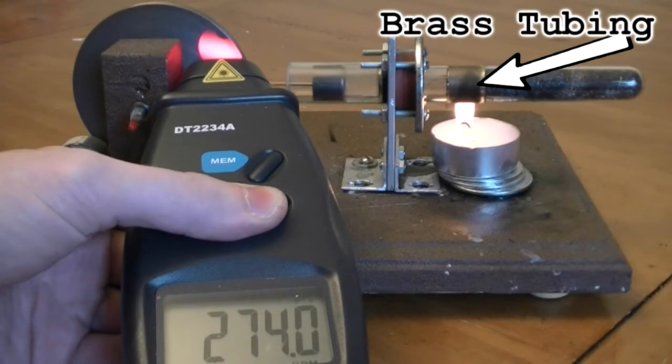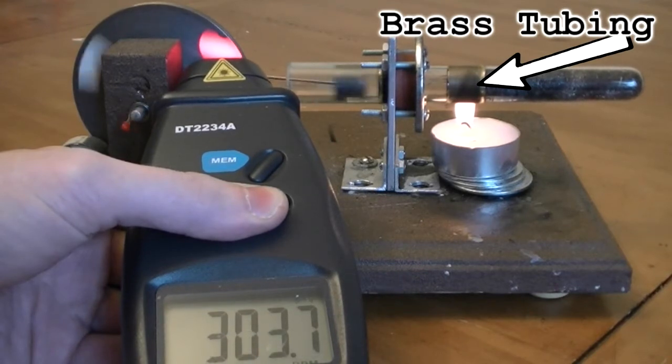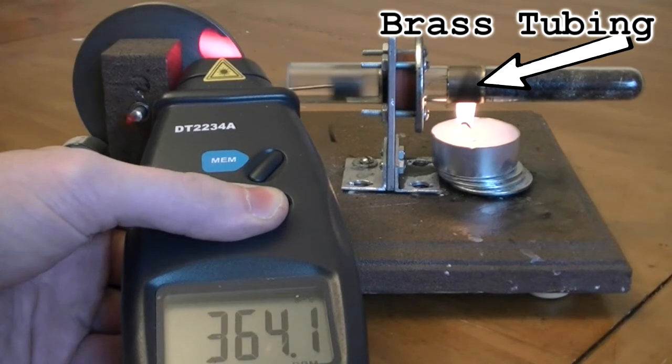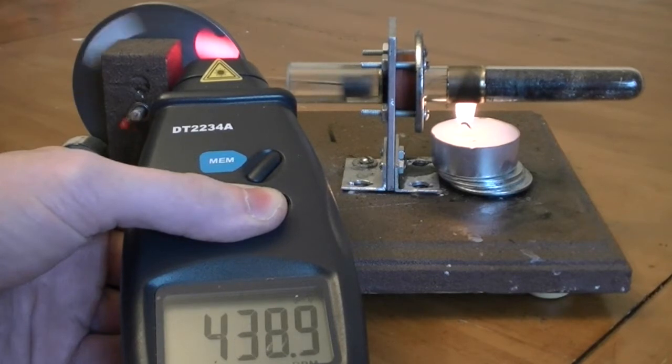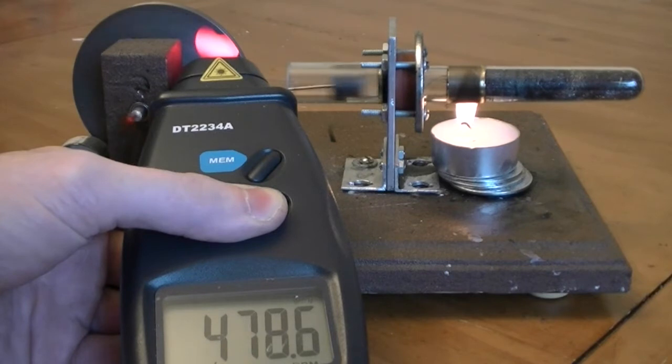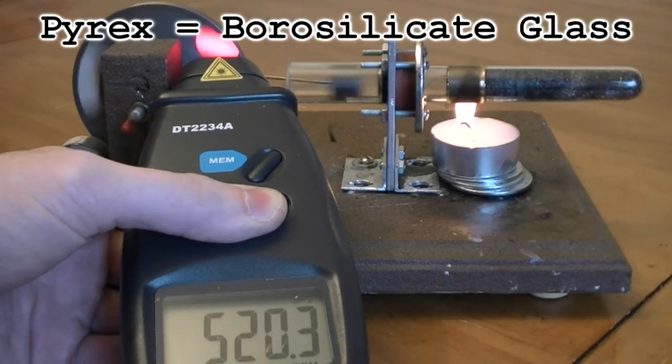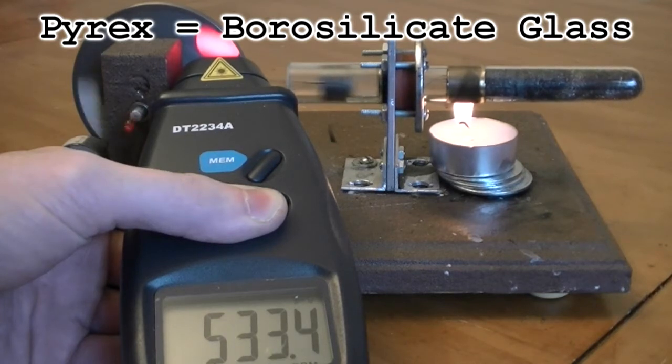I added a small piece of brass tubing that fits tightly around the pyrex test tube. This seems to improve the startup time and causes the engine to run a little faster overall. Brass is a pretty good conductor of heat, so it's probably distributing the heat from the candle more evenly around the pyrex test tube. Pyrex or borosilicate glass is a poor thermal conductor.